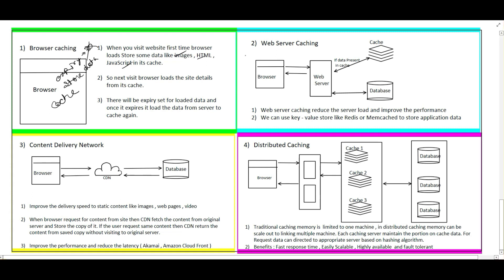The second type is web server caching. In web server caching, a cache is used on the backend side — a key-value store like Redis can be used here. Whenever the browser requests the web server, the web server checks if the data is present in the cache. If present, it retrieves from the cache and returns to the browser. If not present, the web server reads the data from the database, updates the cache, and then returns the data to the browser.